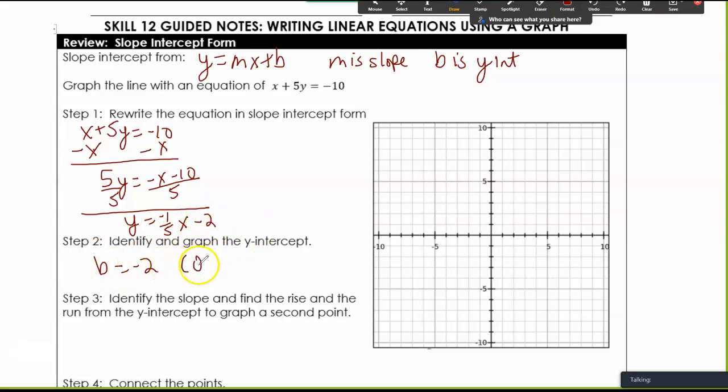B equals negative 2, so my y-intercept is 0, negative 2. Once I identify my slope, m is negative one-fifth or 1 over negative 5. If I do negative 1 over 5, this is down 1, right 5. 1 over negative 5 is up 1, left 5.